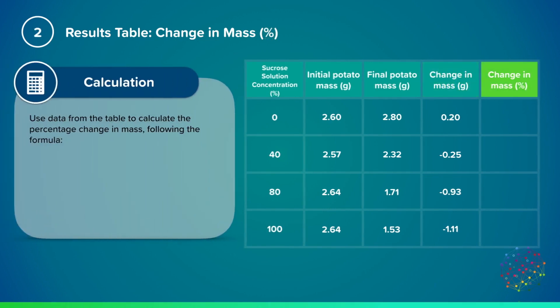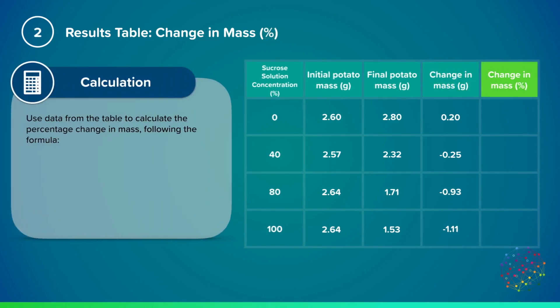The final value to calculate is the percentage change in mass for each potato chip. This is done using the formula change in mass divided by initial mass multiplied by 100. For the data for 0% concentration, this would give a change in mass of 0.20 grams divided by initial mass 2.60 grams multiplied by 100 to give 7.69% change in mass. We can input this value into the table and do the same for the rest of our results.